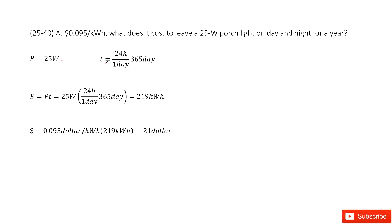Now we need to find the energy consumed in this year. We use the power times the time. So 25 watts times the total hours gives us the final energy in one year, which is 219 kilowatt hours.